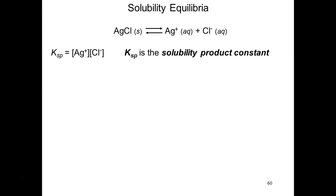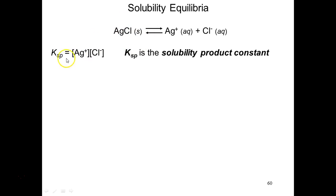Because it's an equilibrium constant, we'll write it like our other equilibrium expressions with the concentrations of each of the species raised to their stoichiometric coefficients. The cation and the anion both have a coefficient of one, so they're both raised to the first power. The solid is omitted from the solubility product equilibrium expression because solids are omitted in all equilibrium expressions.